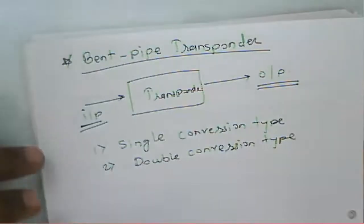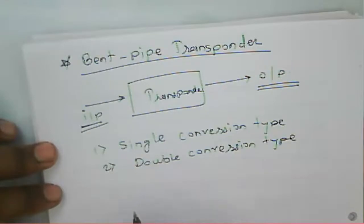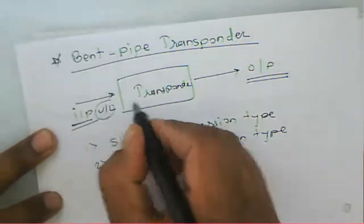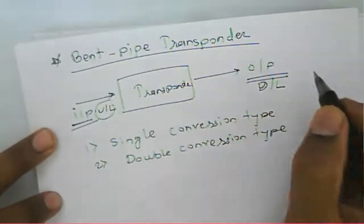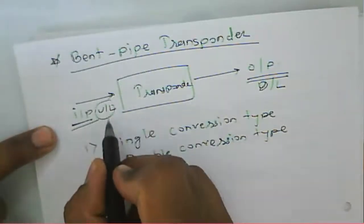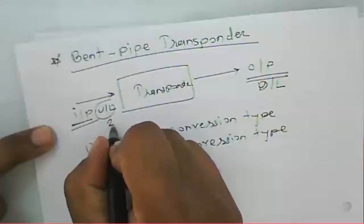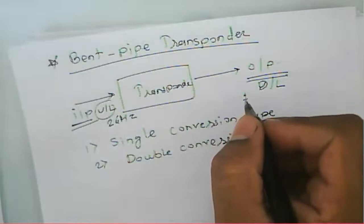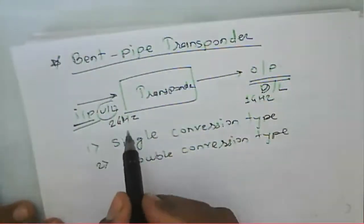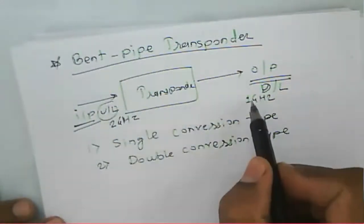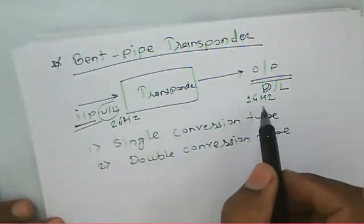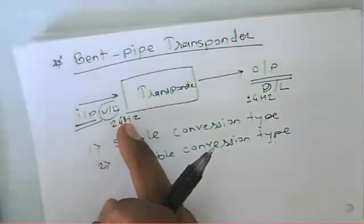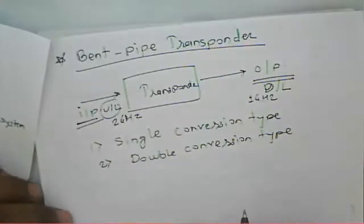In the single conversion type, the input signal at uplink frequency is directly translated to the downlink frequency. For example, if the uplink frequency is 2 GHz and the downlink frequency is 1 GHz, only a single mechanism is used to convert the frequency directly — that's why it is called a single conversion transponder.